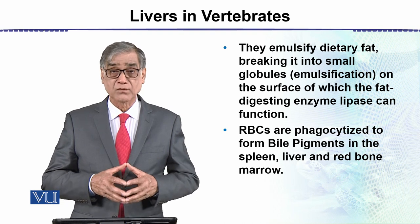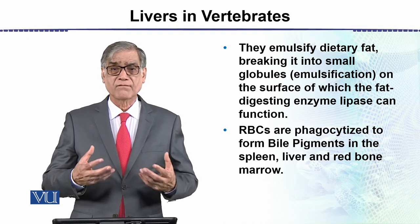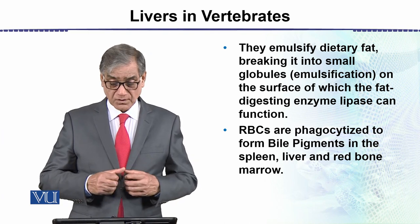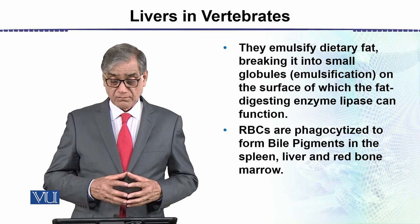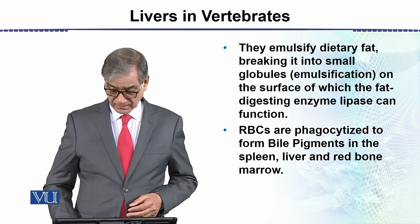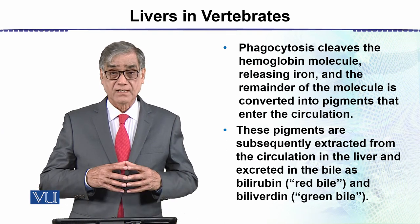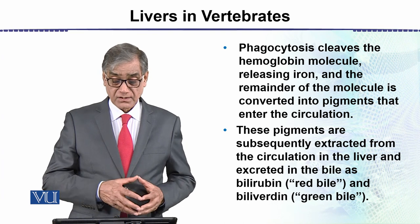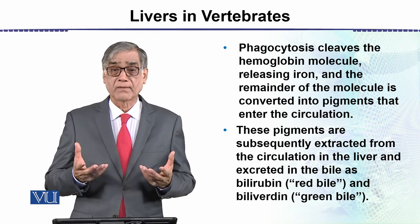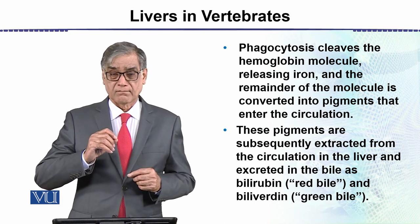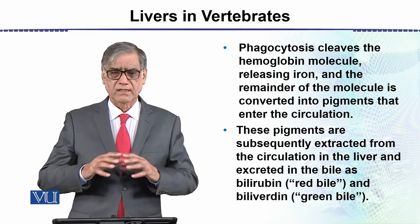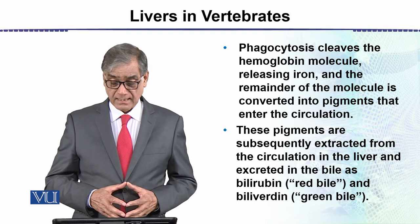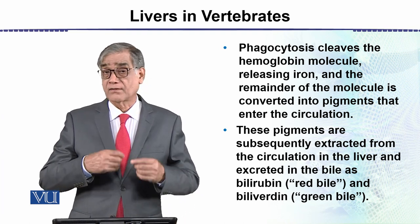Red blood cells are phagocytosed to form bile pigments. The liver absorbs older RBCs and phagocytoses them. Phagocytosis cleaves the hemoglobin molecule, releasing iron. The remainder of the molecule is converted into pigments that enter the circulation. Iron is a component of hemoglobin; once iron is removed, the rest of the protein part is converted into pigments and they enter the circulation.